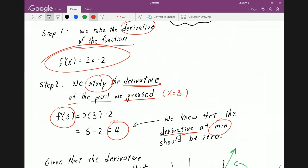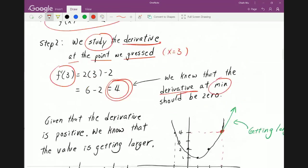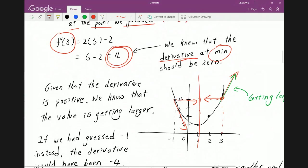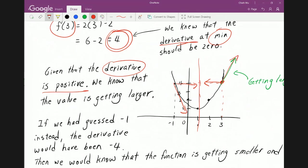But if it's positive, what does that mean? Well, if the derivative is positive, that means we want to go backwards because the minimum is here, right? Now, if the derivative was negative, we want to go forward. So by observing this, we see that if the derivative is positive, we know that the values are getting larger. Therefore, we want to go backwards.